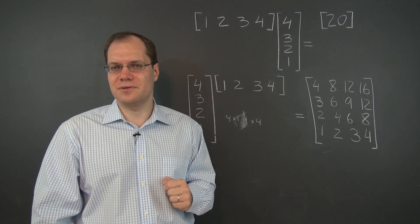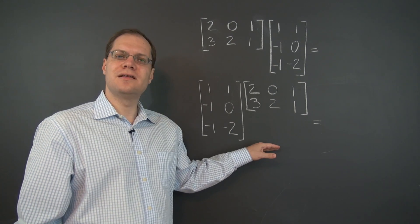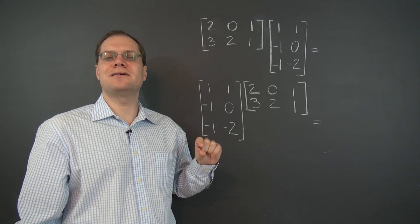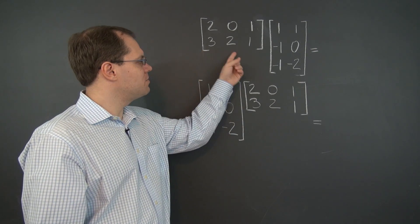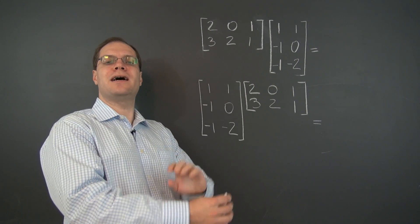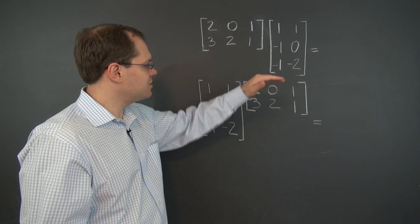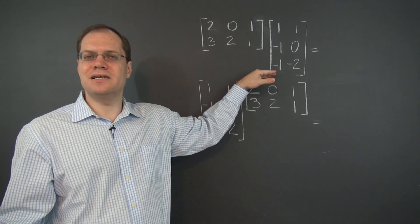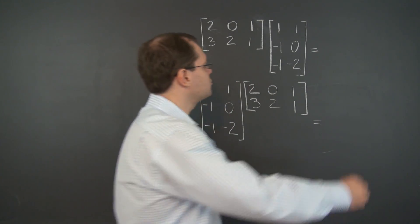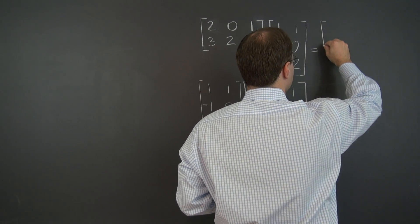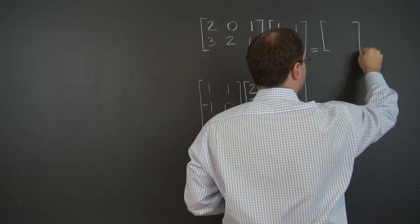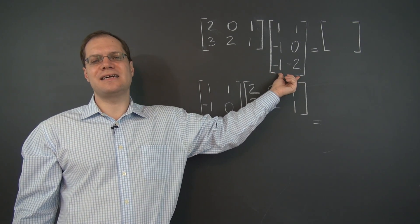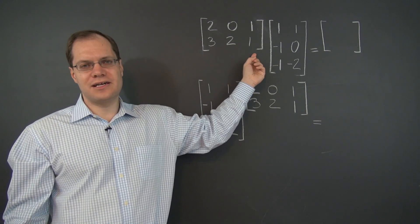Let's consider a few more examples. These two examples also have two of the same matrices, and because their dimensions are opposite — two by three and three by two — we can once again multiply them in either order. So let's consider this order first. What's the dimension of the result? Well, it's two by two. So we have to consider two different linear combinations of these three columns.